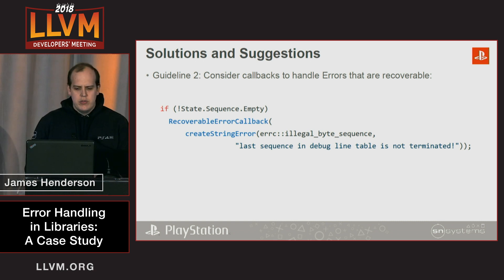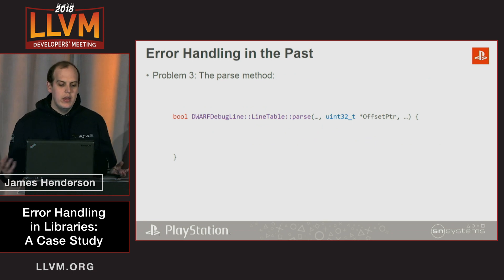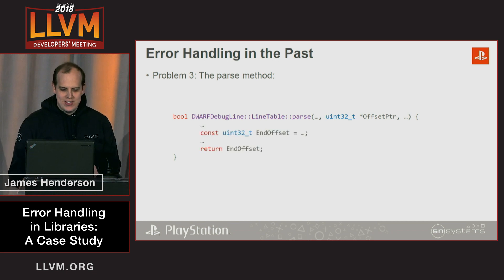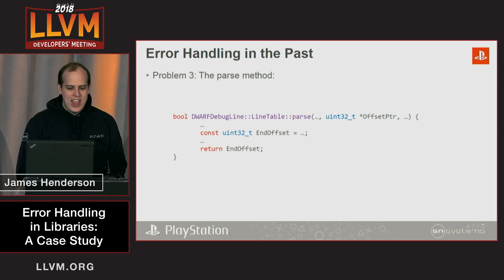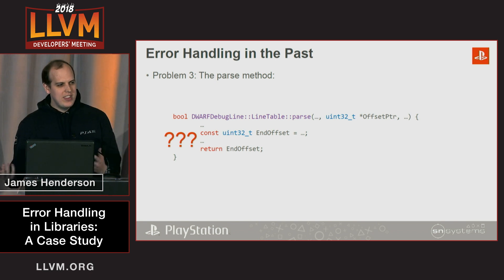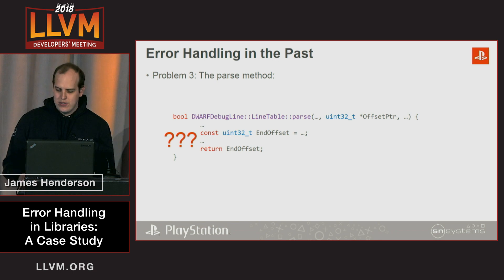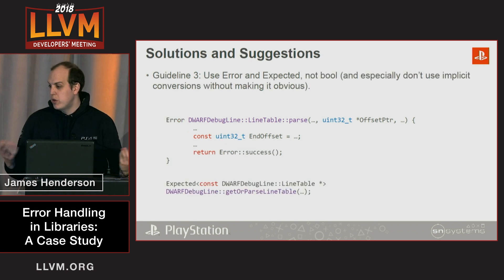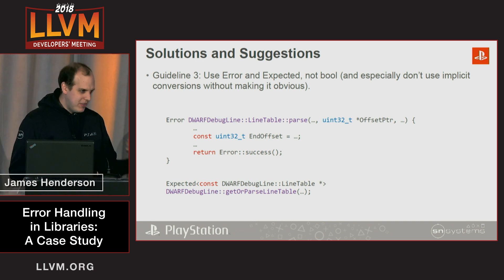This is the parse function in the DwarfLineTable class. It takes an offset pointer and also returns a Boolean. That offset pointer is used to calculate an end offset, and then the function returns that end offset after doing some more work. Some of you might notice the issue — end offset is not of type Bool. It actually works because this is an implicit conversion; it is technically valid. However, was it the intent? It's hard to tell from reading the code. My recommendation is to use something like LLVM error and expected instead, and don't use implicit conversions unless you actually mean to — document it with a comment if you do.